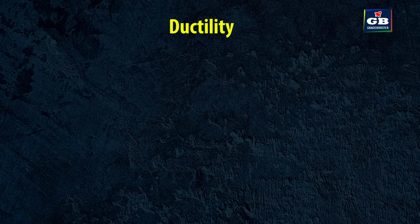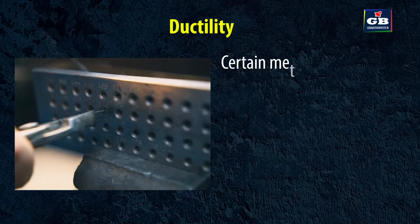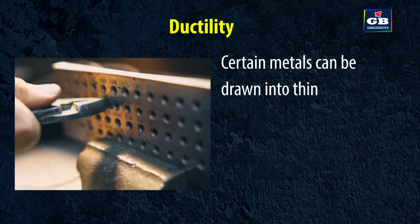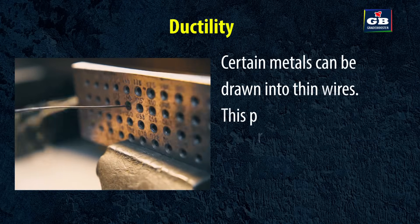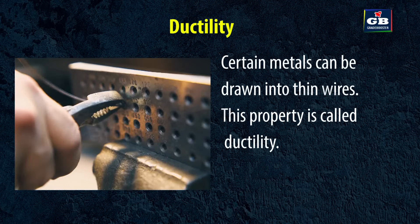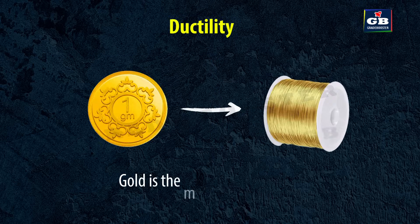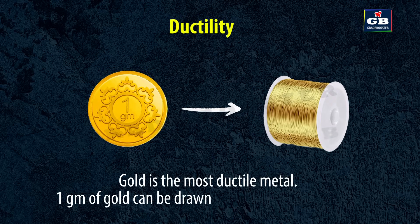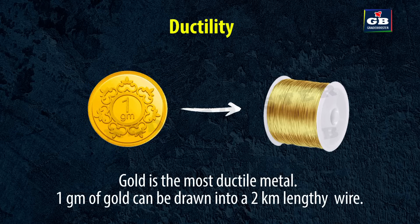Ductility: Certain metals can be drawn into thin wires. This property is called ductility. Gold is the most ductile metal. 1 gram of gold can be drawn into a 2 km lengthy wire.